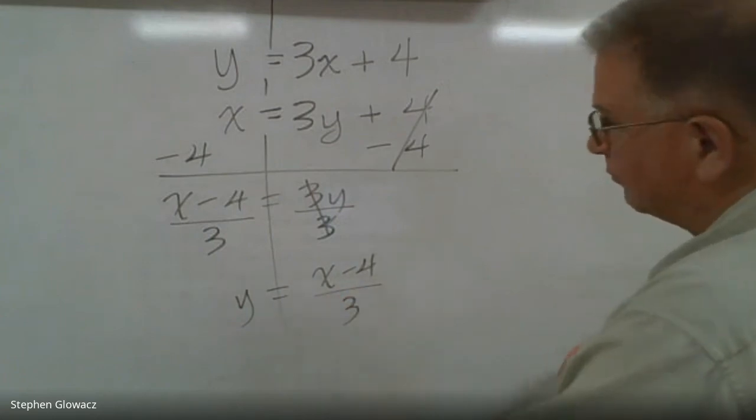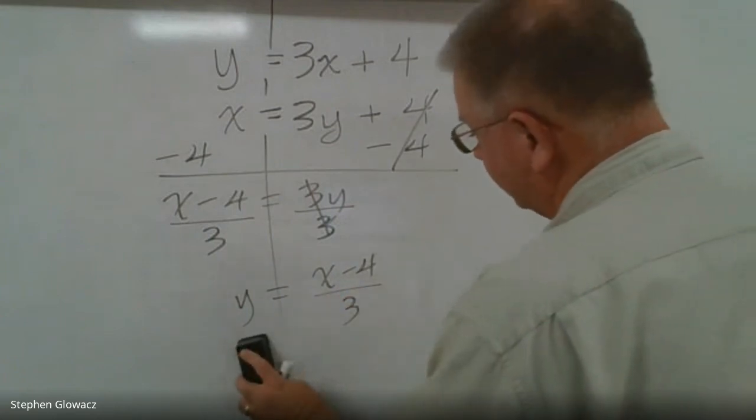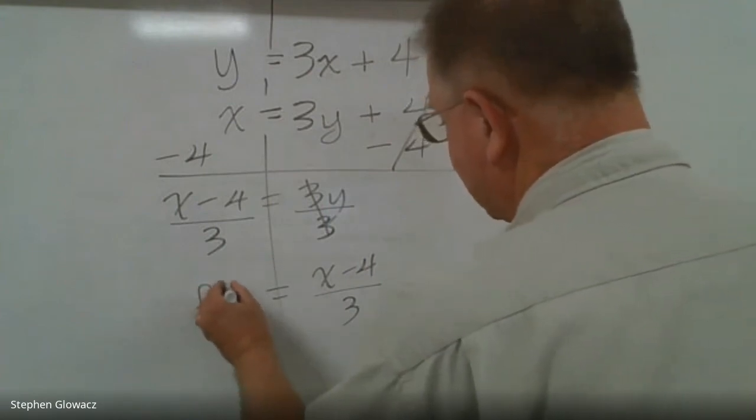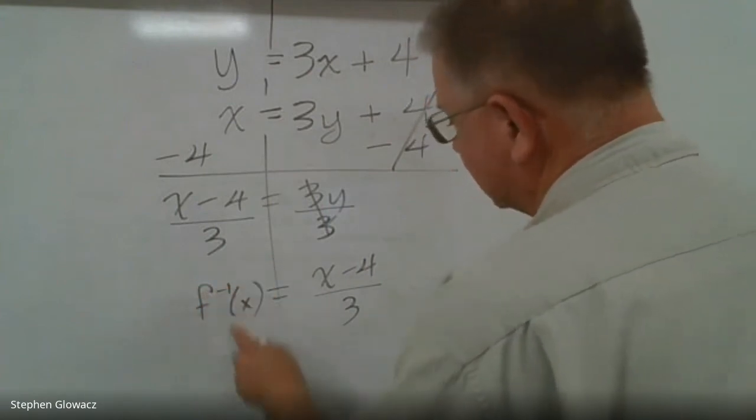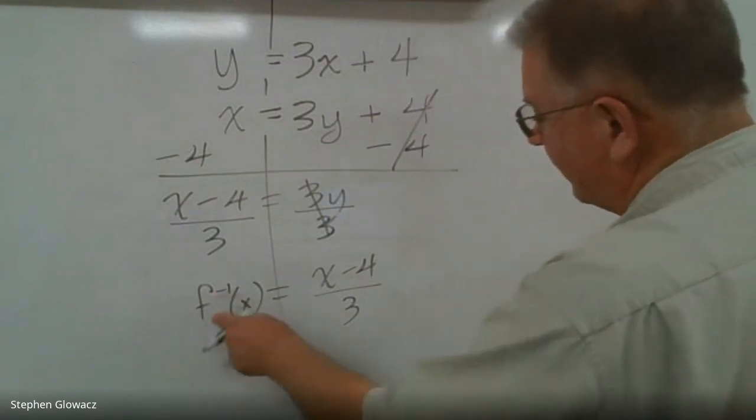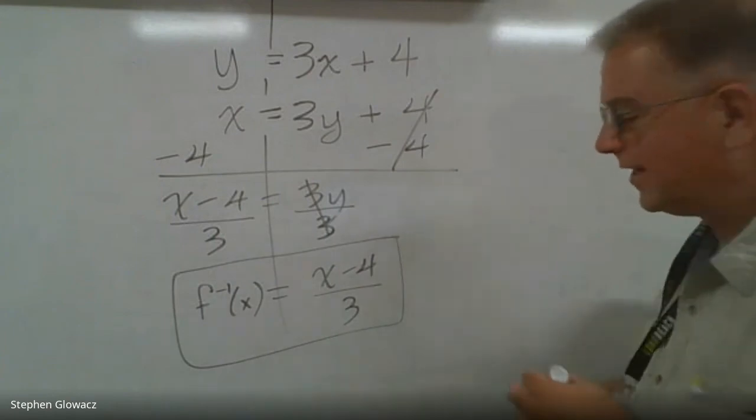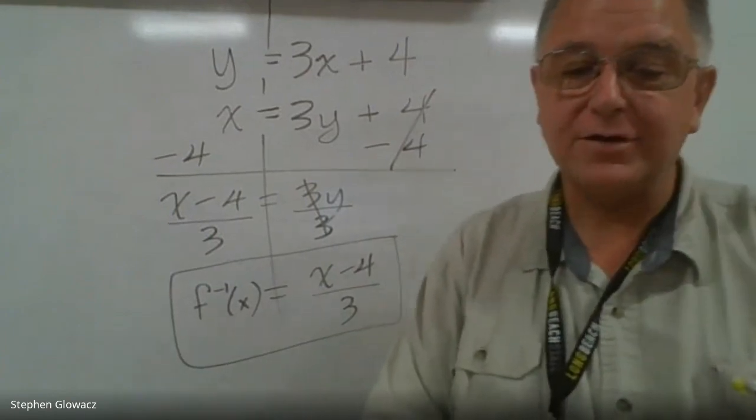And then we want to use our function notation to show that it's an inverse. So instead of y, we're going to put f inverse of x. That's the way you read the little -1 here: f inverse of x. f^(-1)(x) = (x - 4)/3. That is how you find the inverse of a function.